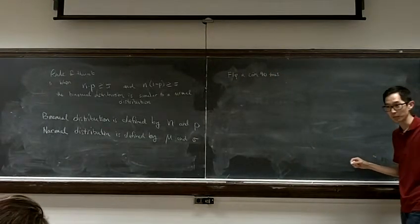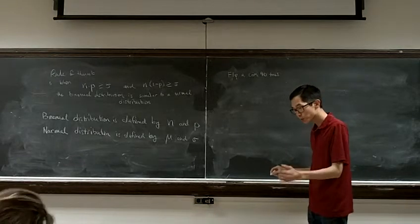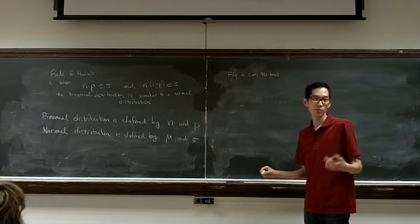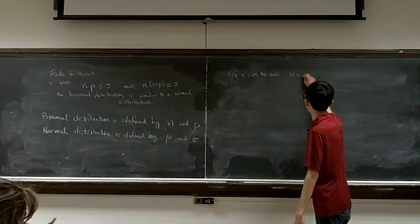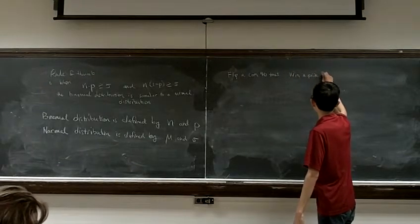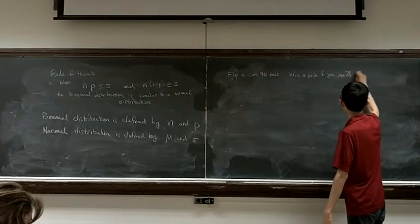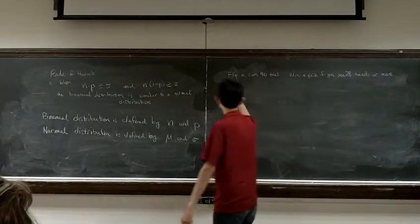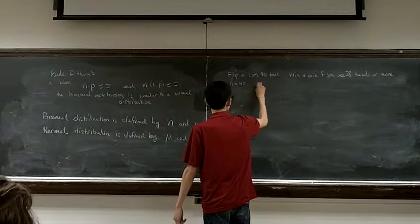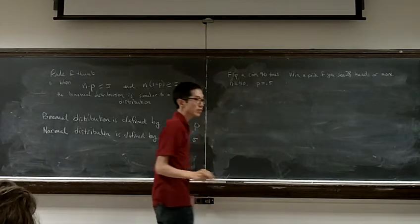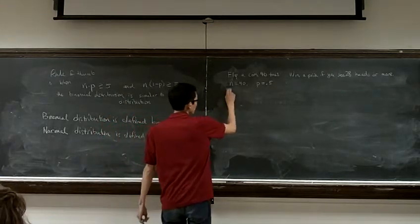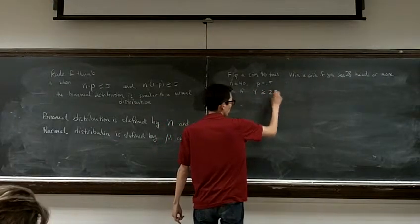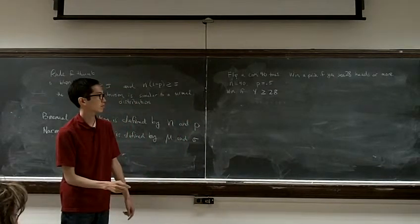What if I said we're going to flip a coin 40 times. So we're going to play some silly game. And I'm going to say you get to flip a coin 40 times, and if you get 28 heads or more, you win a prize. Okay, so n is equal to 40, p is equal to 0.5. And we win if y is greater than or equal to 28.